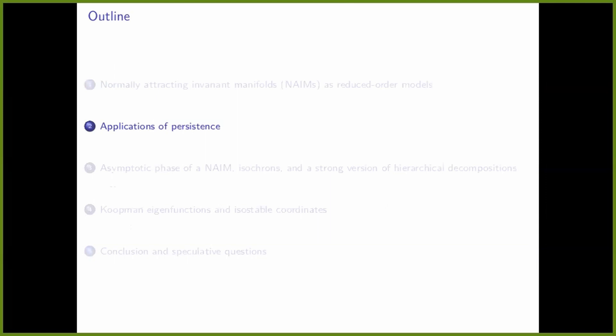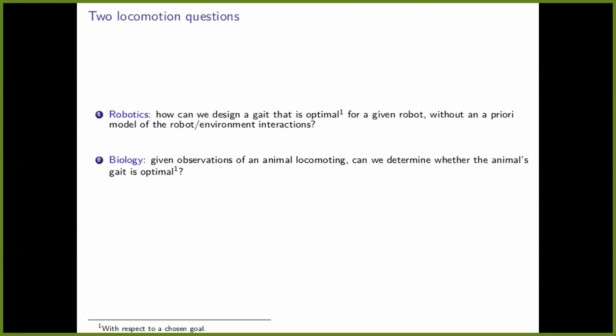So that's just a bunch of theory — what can you do with it? Here are two questions that probably look like they have nothing to do with anything I've talked about so far. The robotics question: given some legged robot, how can we design a gait that is optimal with respect to some metric without any a priori model of the robot and its interactions with the environment? What if you didn't have a model, didn't want to come up with one, or didn't trust your model?